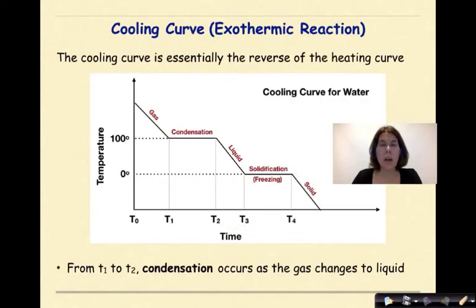Cooling curves as exothermic reactions. The cooling curve is essentially the reverse of a heating curve. From T1 to T2, which we see right here, condensation occurs as the gas changes to a liquid.